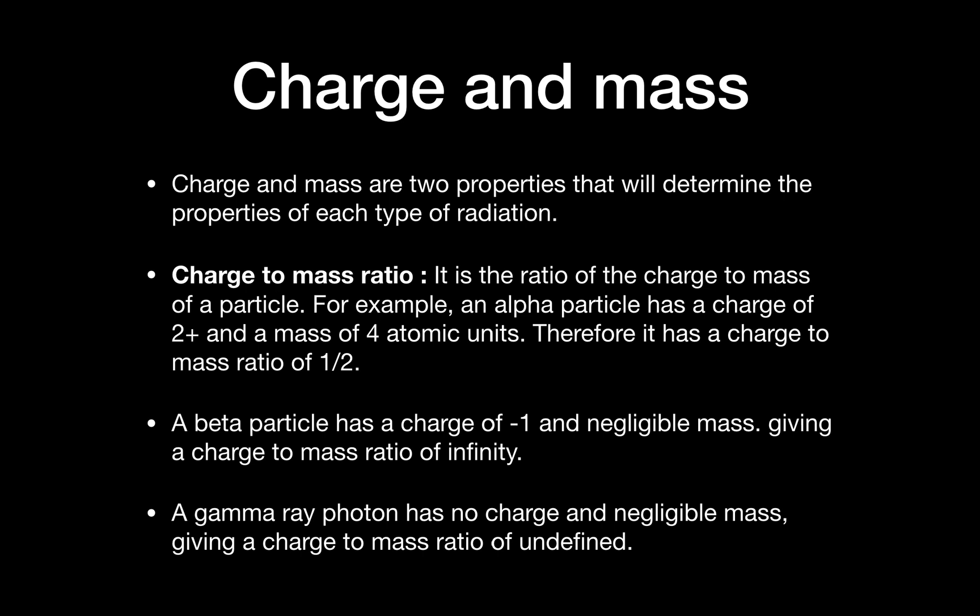A beta particle has a charge of -1 and negligible mass, giving a charge to mass ratio of virtually infinity. A gamma ray photon has no charge and negligible mass, giving a charge to mass ratio of undefined. So the charge to mass ratio is an important quantity. It will be used to determine how each of these particles behave under different environments.